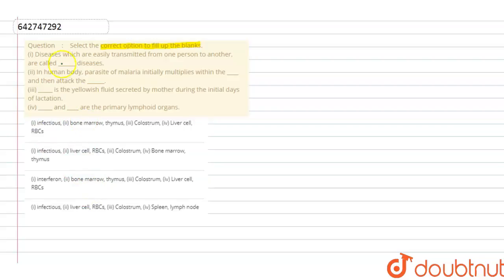Here we will see blank one by one. First one is: diseases which are easily transmitted from one person to another are called blank diseases. These are diseases transmitted from infected person to healthy person, which can be transmitted by any means - by infected food, by infected air, air droplets. Diseases transmitted from infected person to healthy person are called communicable diseases or infectious diseases.